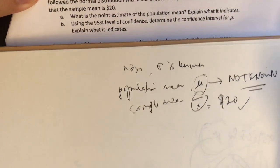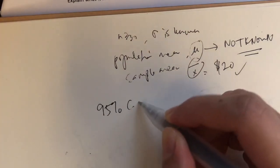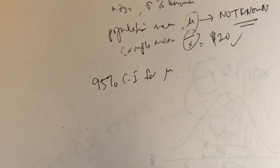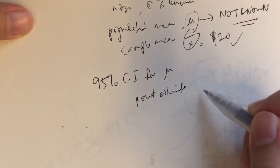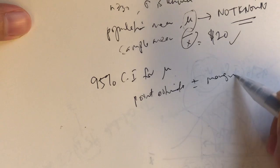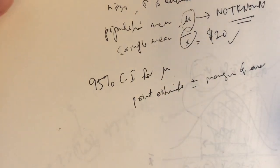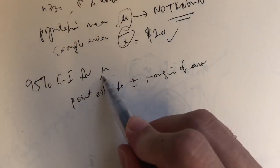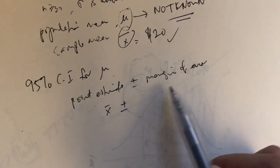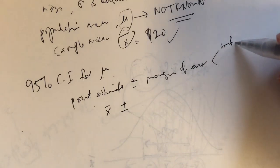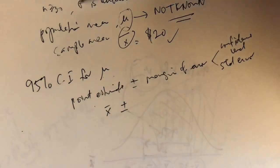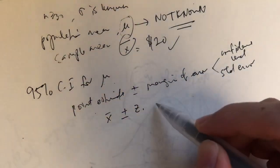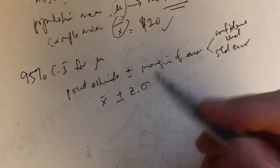Now the next question: construct the 95% confidence interval for mu. Remember what we learned in the last video. There are two parts to the formula. First of all, we start with the point estimate. And then because it's an interval, plus or minus the margin of error. So the point estimate for mu is x̄, plus or minus. Now, margin of error consists of two parts: the confidence level and the standard error. For a large sample size, the confidence level uses z. Standard error is sigma over the square root of n, since sigma is known.